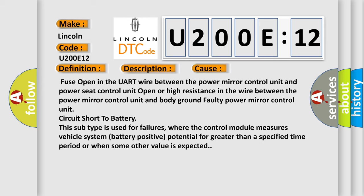Fuse open in the UART wire between the power mirror control unit and power seat control unit, open or high resistance in the wire between the power mirror control unit and body ground, faulty power mirror control unit, circuit short to battery.